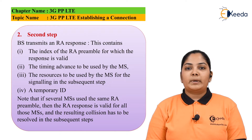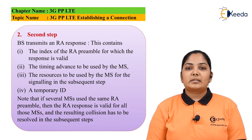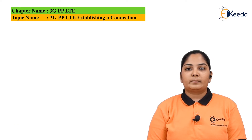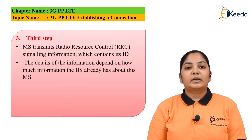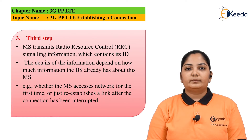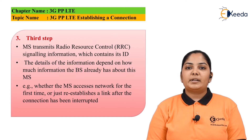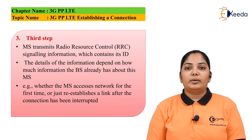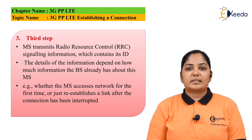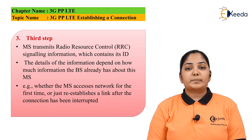Note that if several mobile stations have used the same RA preamble, then the RA response message is valid for all those mobile stations and this results in a collision. This collision will be resolved in the subsequent steps. In the third step, the mobile transmits the radio resource control signaling information which contains the ID. The details of this information depend on how much the base station already knows about the mobile station — for example, whether the mobile station is accessing the network for the very first time or is just re-establishing a connection after it has been interrupted.